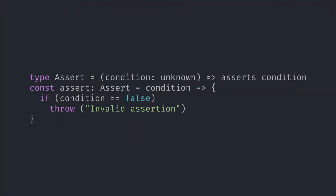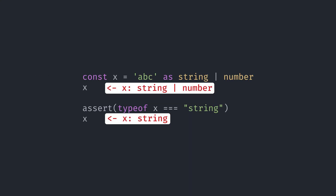Before we wrap this up I want to show you a different signature for assertion functions. Weird, right? There is no type predicate, so what are we asserting? This signature means that the condition to check is already a type guard. For example, you could give it a type expression and it would narrow the type accordingly.